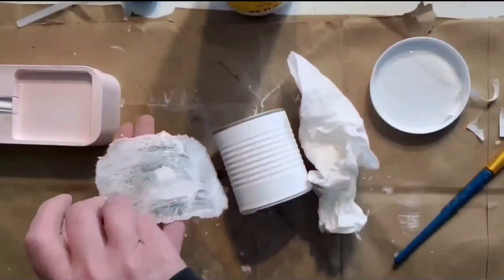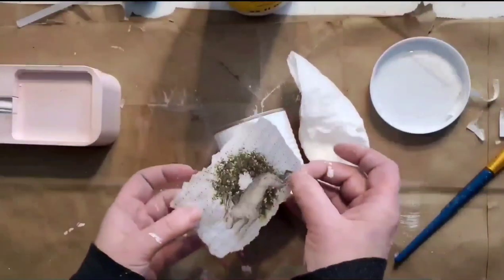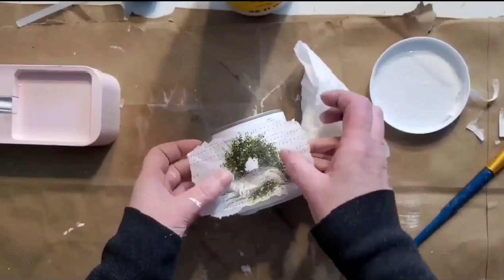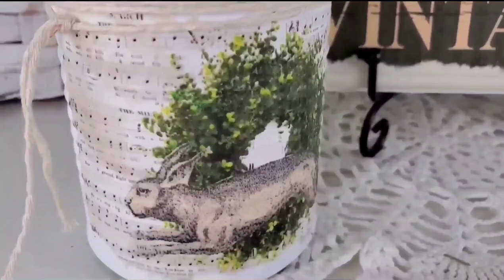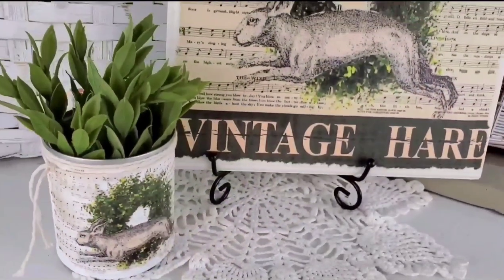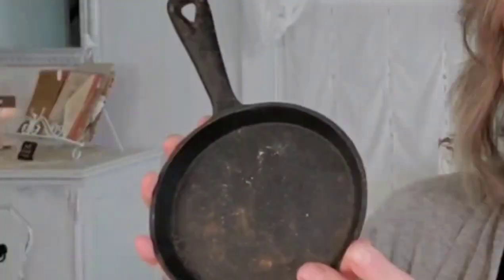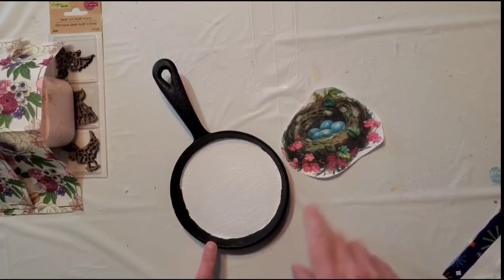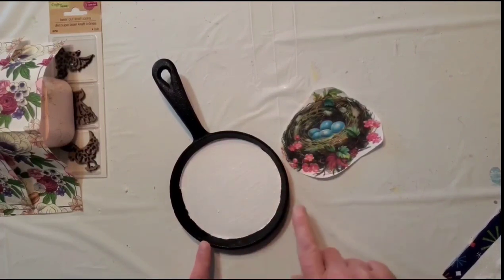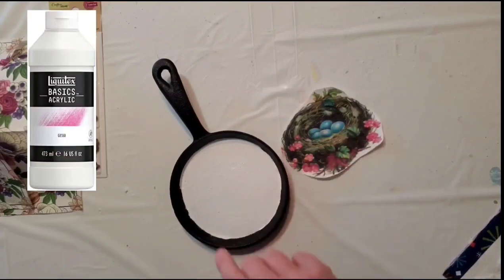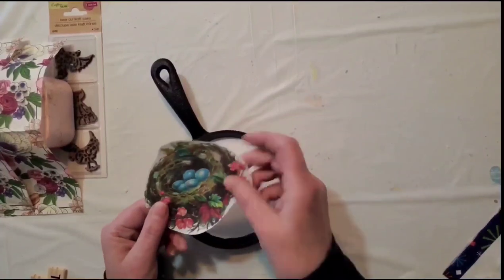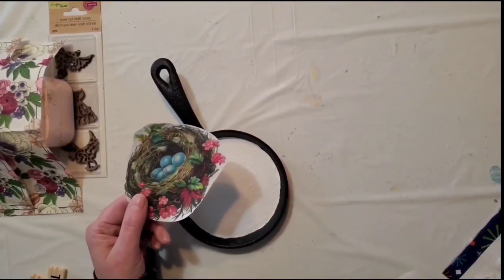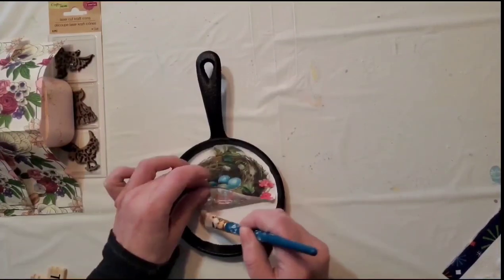I have a little mini cast iron pan. I applied two coats of gesso and a coat of chalk paint to the inside. And then I found this nest image on Graphics Fairy, and I printed it out on rice paper, which I'm going to apply some Mod Podge.